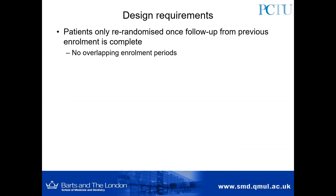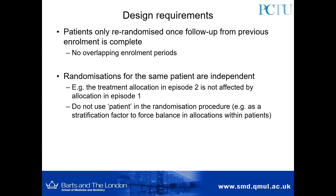There are only two design requirements for a re-randomization trial. First, patients can only be re-enrolled and re-randomized once the follow-up period from their previous enrollment is complete — there can be no overlapping enrollment periods. Second, randomizations for the same patient must be independent: the treatment allocation in a patient's second episode should not be affected by what treatment they received in their first episode. We cannot use patient as a stratification factor in the randomization procedure, so each allocation needs to be done independently.